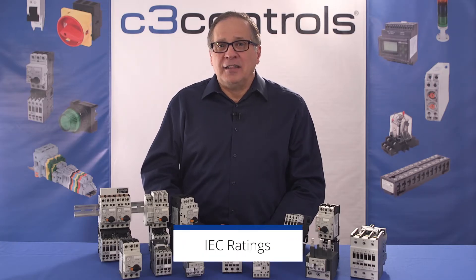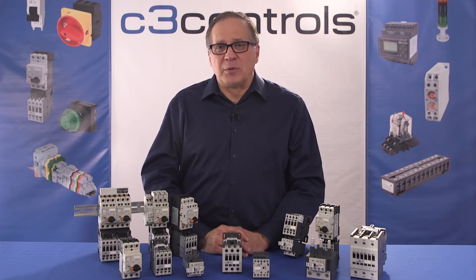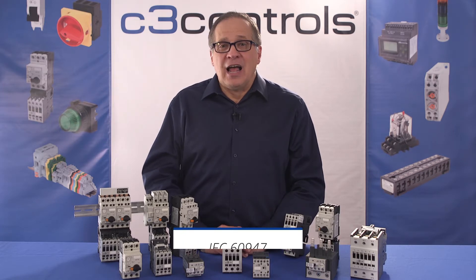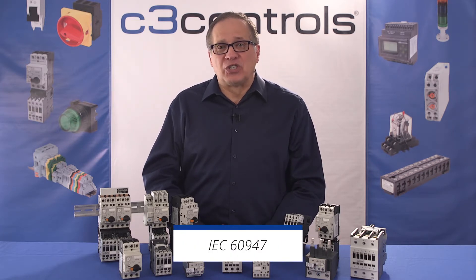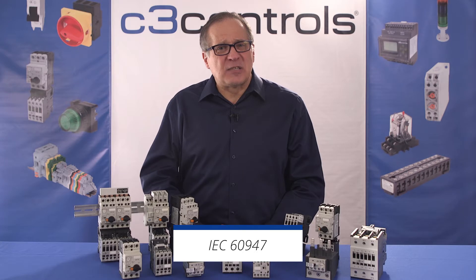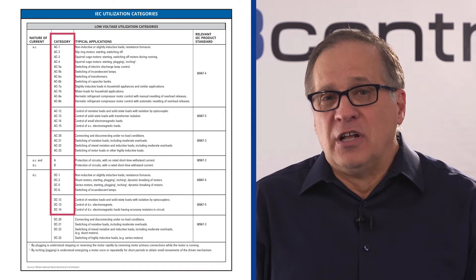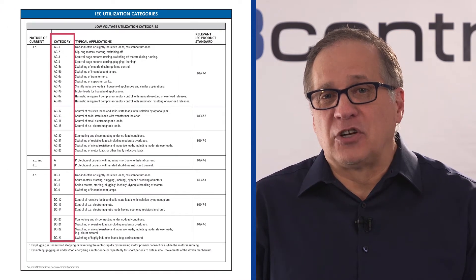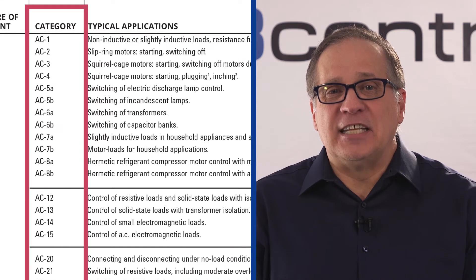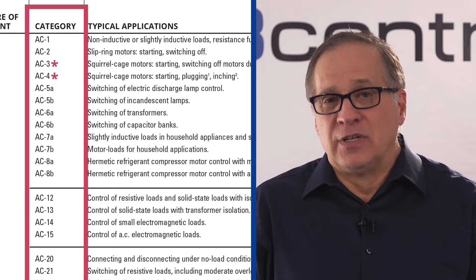Next up is the IEC rating. The International Electro-Technical Commission has specified the operational and performance characteristics for IEC devices in their publication IEC 60947. Standard sizes are not specified by the IEC. The typical duty cycle of an IEC device is defined by utilization categories. For general motor starting applications, AC3 and AC4 are the most common utilization categories. Unlike NEMA sizes, IEC devices are typically rated by their maximum operational current, thermal current, horsepower, and/or kilowatt rating.